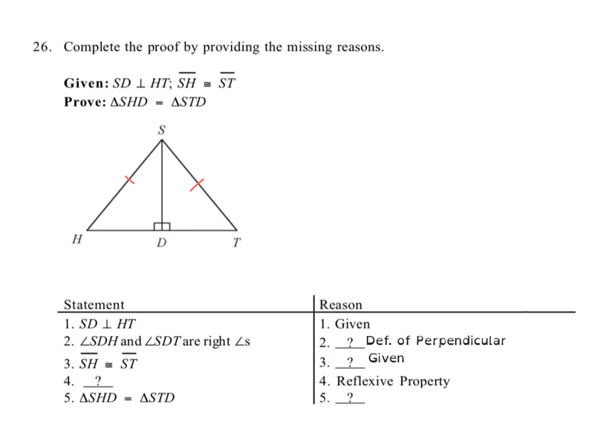We see by the reflexive property of congruence, step four doesn't have the statement, it's just got the reason. But by the reflexive property, what would be reflexively congruent in this particular figure? Well, that would be SD, the side that's being shared. That line that runs down the middle is a shared side for both of the triangles on the left and right, and is reflexively congruent to itself. So we're going to write that in there.